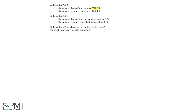In this question, we're told that at the end of 2017, the value of Tamara's house was £220,000 and the value of Raheem's house at the end of 2017 was £160,000. We're then told that at the end of 2019, the value of Tamara's house had decreased by 20%, and the value of Raheem's house had increased by 30%. We need to find out whose house had the greater value at the end of 2019.